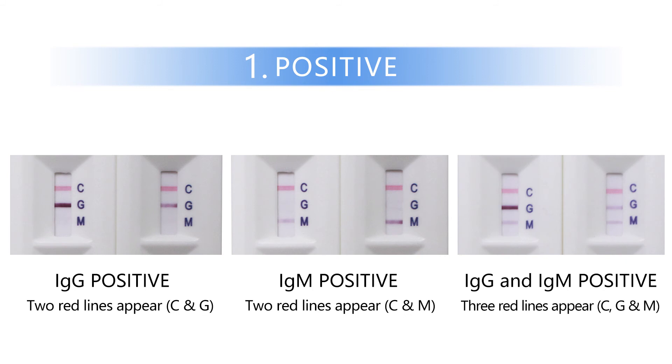IgG and IgM positive. All three red lines appear on C, G, and M regions.